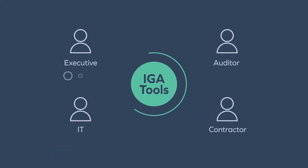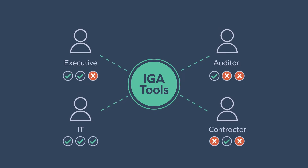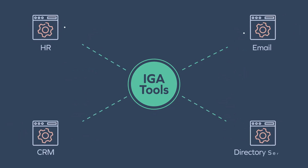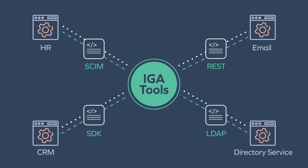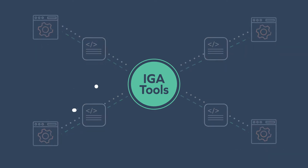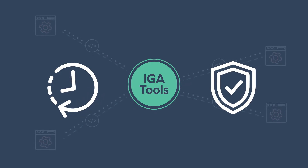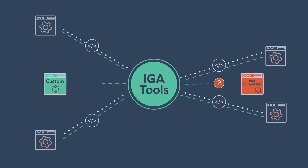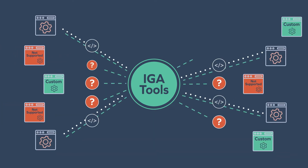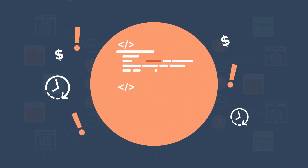Identity governance and administration tools are meant to enable and secure the digital identities of all users. To do so, IGA tools need to connect and provision access to a variety of business applications. But IGA can't slow down operations or leave you unprotected. How do you connect to homegrown applications or those not supported out of the box? Does connecting to applications require consulting hours and or custom code development?